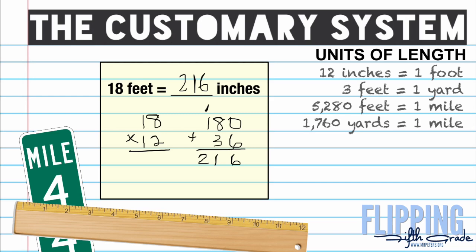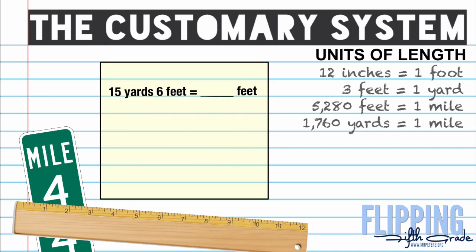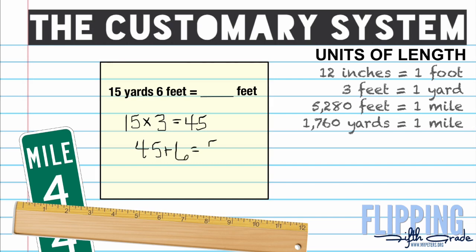So in 18 feet there are 216 inches. Now what happens when you get a problem like this: 15 yards 6 feet equals how many feet? We already have 6 feet, so we convert the yards portion into feet and add the 6 to it. Converting yards to feet requires multiplication, so 15 times 3 gives me 45. Then 45 plus 6 gives me 51. So 15 yards and 6 feet equals 51 feet.